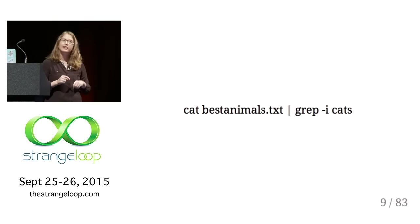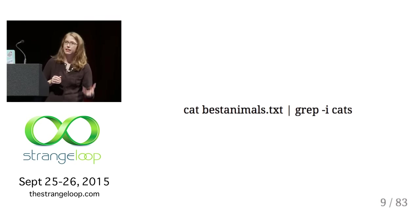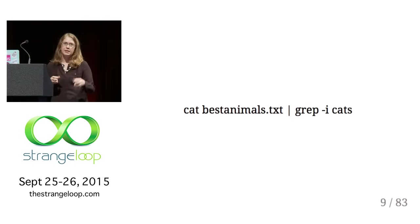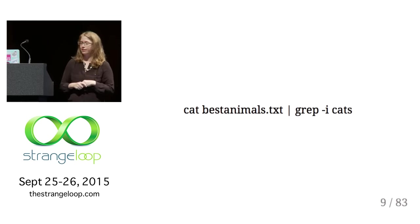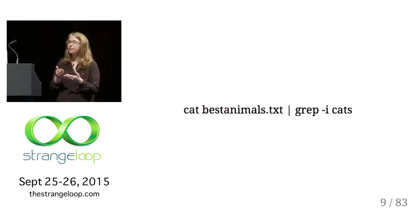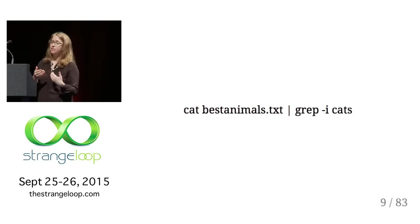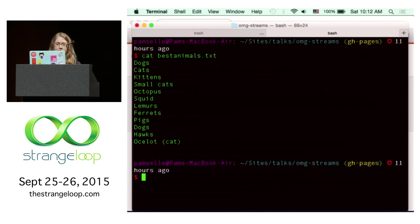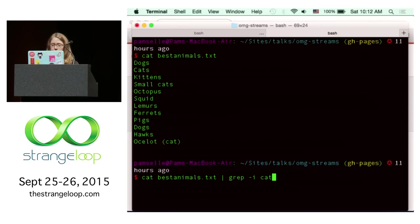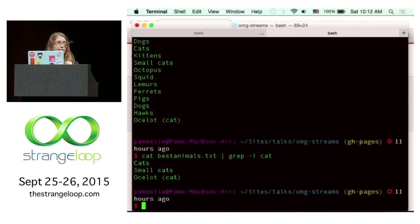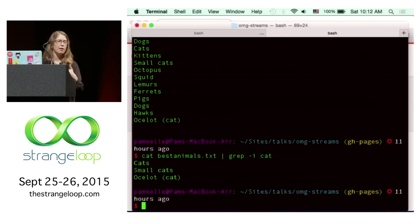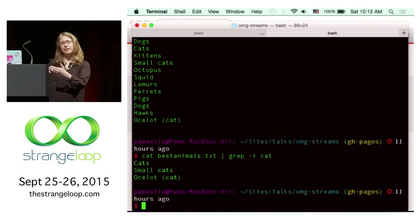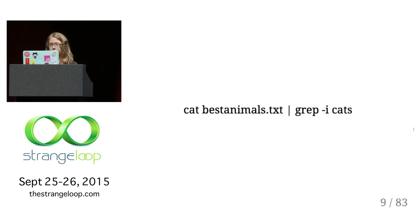All glory to the pipe operator. The pipe operator is that skinny line in between two commands — cat being a command that concatenates to the terminal, and grep being a global search and replace. In this example, we have a text file called 'best animals' and we're going to search within it for instances of 'cats,' because the internet is run by cats. We use the pipe operator to take the output from the first command and send it to the second command.